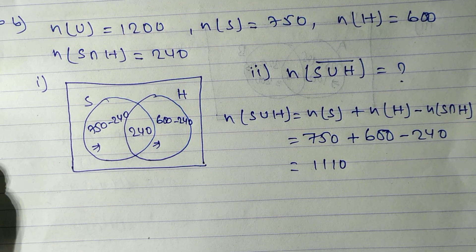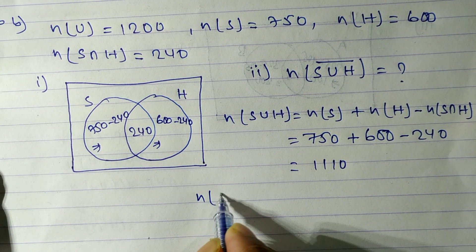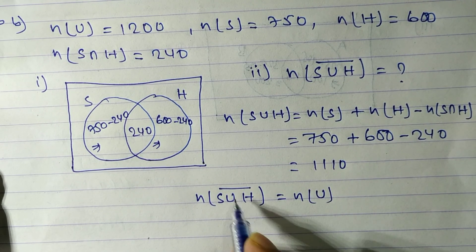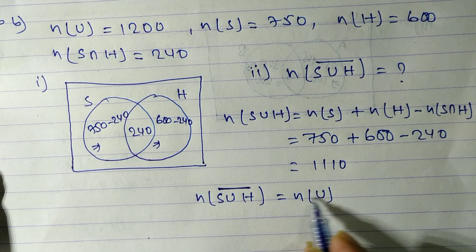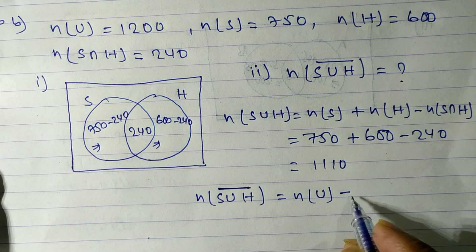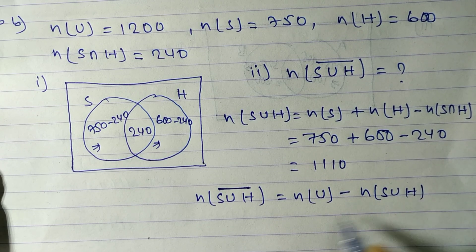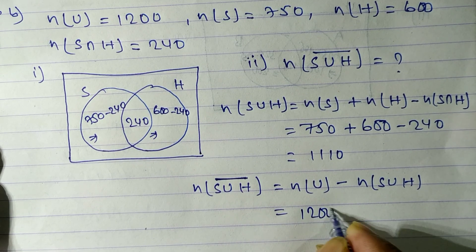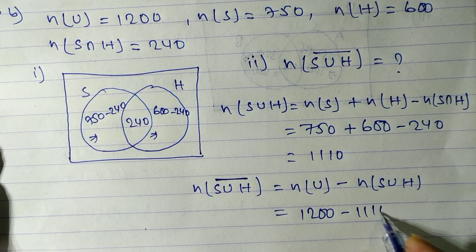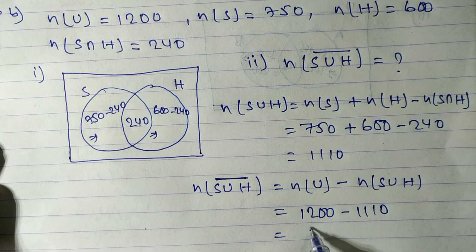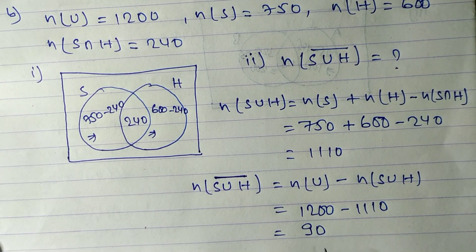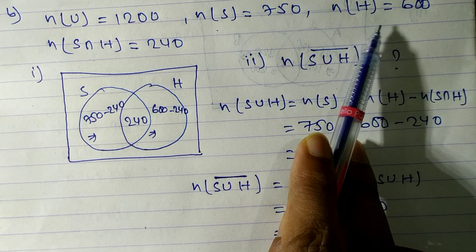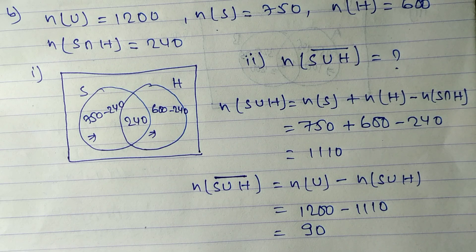n(S∪H) = 1110. Now we find n(S∪H) complement. When we have a complement, we always subtract from n(U). So the formula is n(U) − n(S∪H) = 1200 − 1110 = 90. So 90 students did not like science as well as humanity faculties. Hope you understand this.